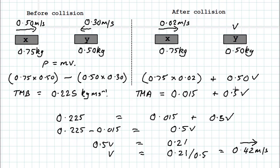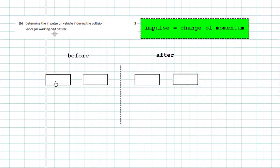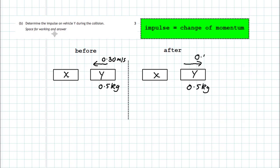Part b asks us to determine the impulse on vehicle Y during the collision. To find impulse, we need to find the change in momentum - that's the key relationship: impulse equals change of momentum. Looking at vehicle Y: before the collision it was traveling to the left with a velocity of 0.30 meters per second and a mass of 0.5 kilograms. After the collision, its mass is still 0.5 kilograms and it's traveling to the right with a velocity of 0.42 meters per second.